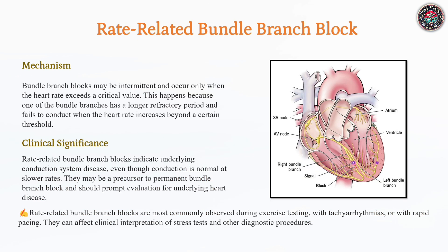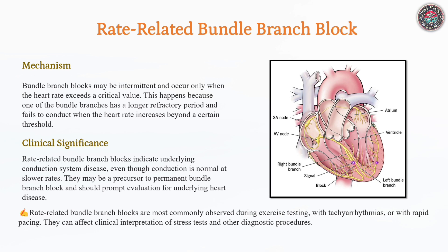Bundle branch blocks can be rate-dependent, appearing only when the heart rate exceeds a certain threshold due to conduction system refractoriness. This phenomenon is commonly seen during exercise testing, tachyarrhythmias, or stress-induced states, and may indicate underlying conduction disease even in the absence of permanent bundle branch block.